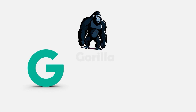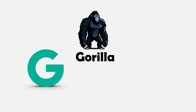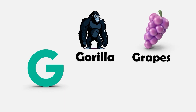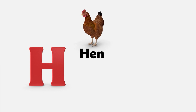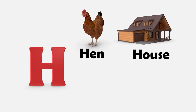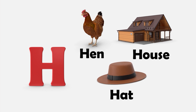G — G is for Gorilla. G is for Grapes. And G is for Glass. H — H is for Hen. H is for House. And H is for Hat.